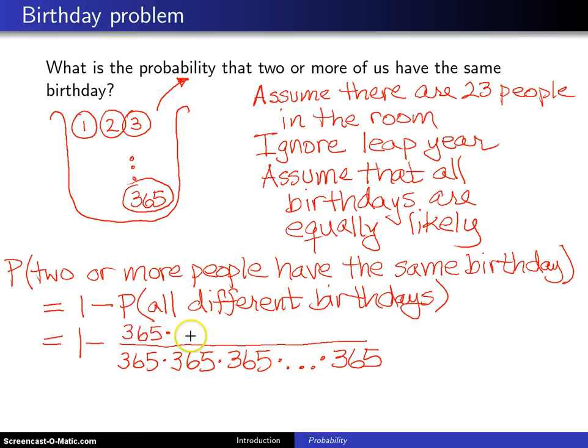But on the second draw, to correspond to having different values, you put a 364 in there because you're not allowed to pull that first ball that you pulled out. And then on the next draw, there's 363 possibilities. You can't get either of these first two draws.